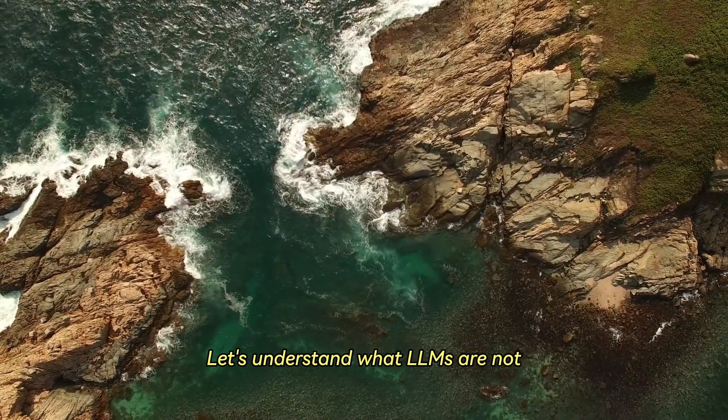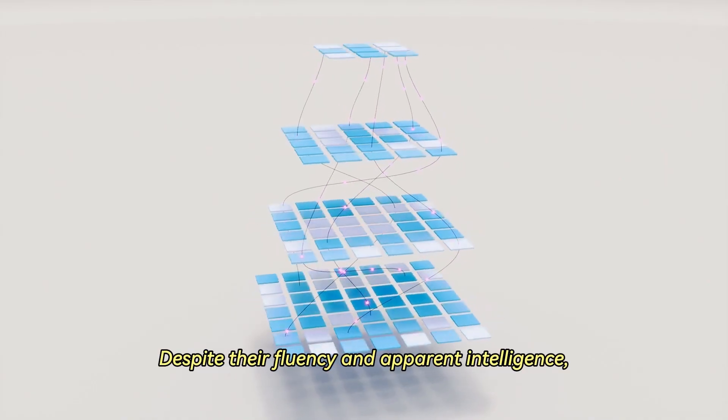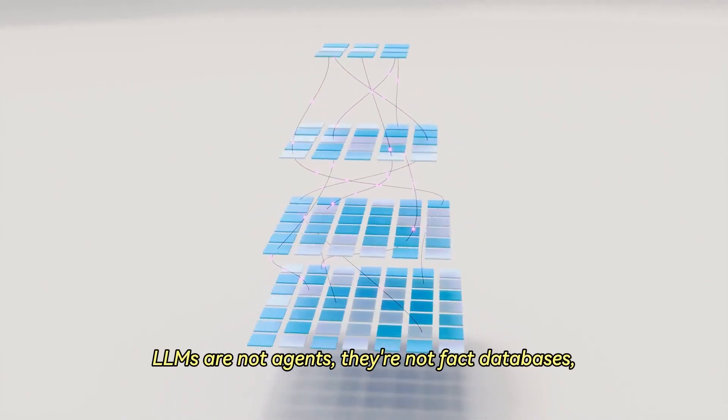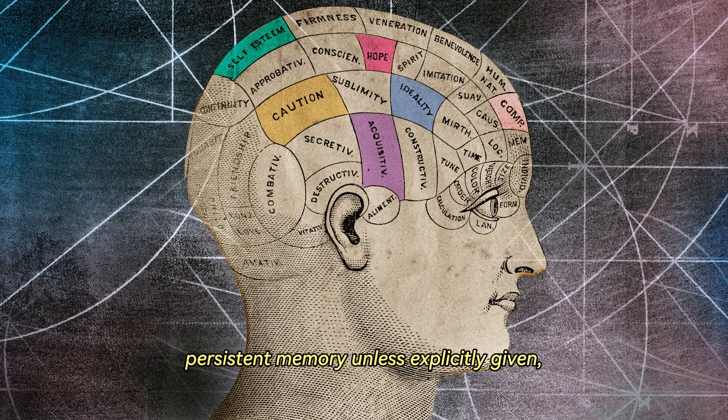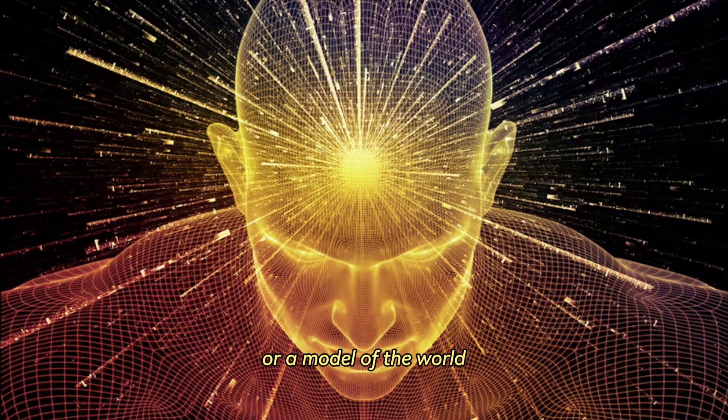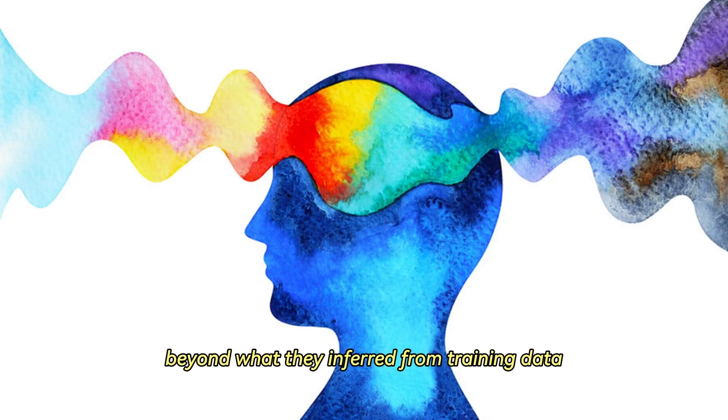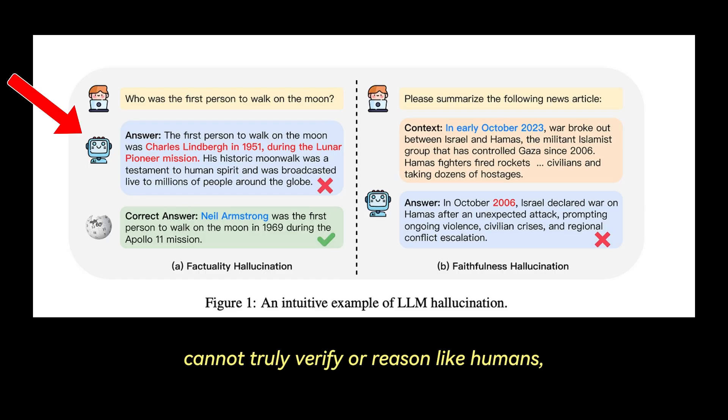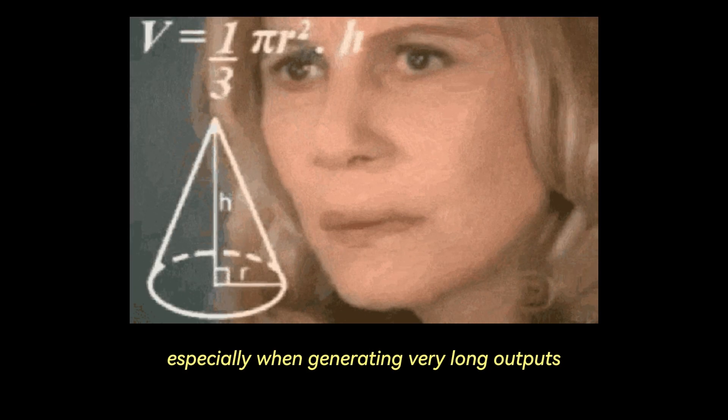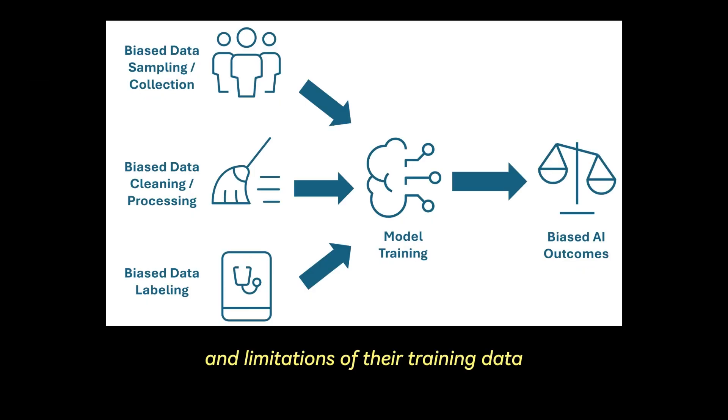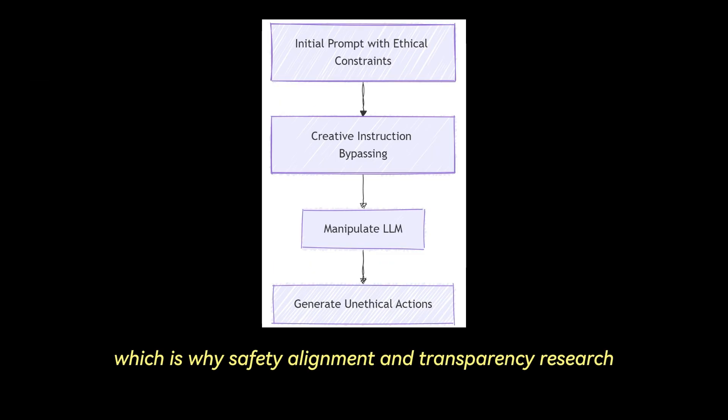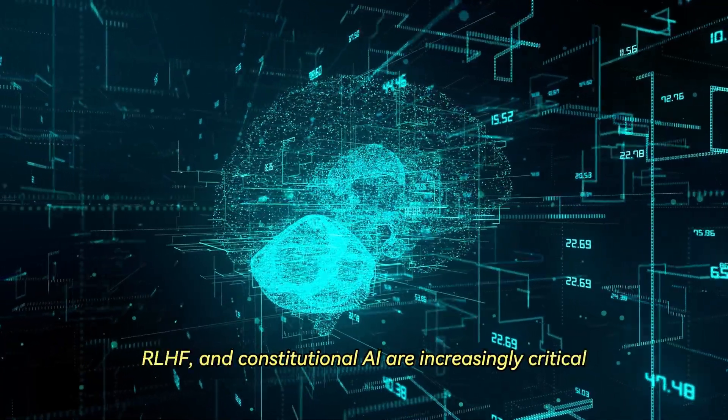Let's understand what LLMs are not. A couple limits and misconceptions. Despite their fluency and apparent intelligence, LLMs are not agents, they are not fact databases, and they are not conscious. They don't have beliefs, persistent memory unless explicitly given, or a model of the world beyond what they inferred from training data. They often hallucinate facts, cannot truly verify or reason like humans, and sometimes fail at long-term coherence, especially when generating very long outputs. They are also sensitive to phrasing, can be subtly manipulated, and reflect the biases and limitations of their training data. These risks grow as the models get more capable, which is why safety, alignment, and transparency research, including interpretability, RLHF, and constitutional AI are increasingly critical.